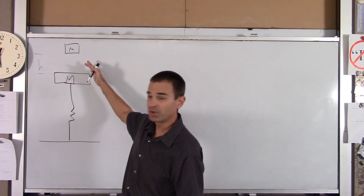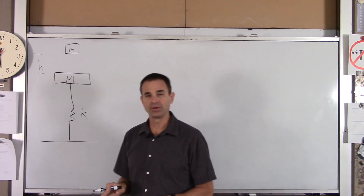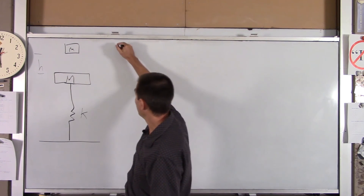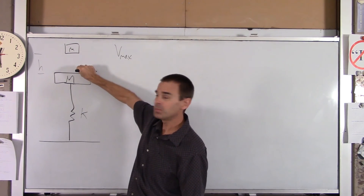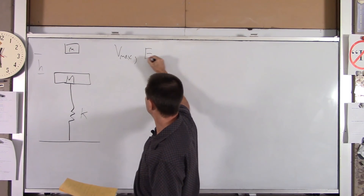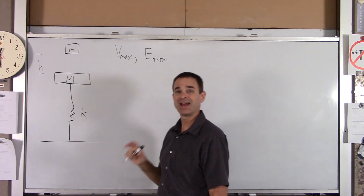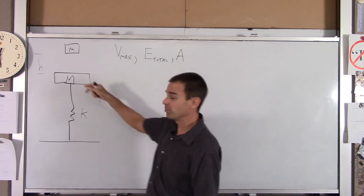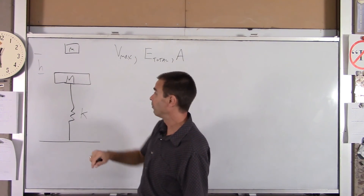Assuming we have numbers for all these — the spring constant is k — I want to find the following three things: the max velocity of the two-block system after the collision, the total energy in the system after the collision, and the amplitude of the motion. So when this mass hits this mass and they bob up and down together, what's their amplitude?